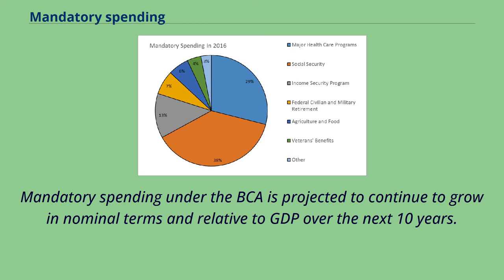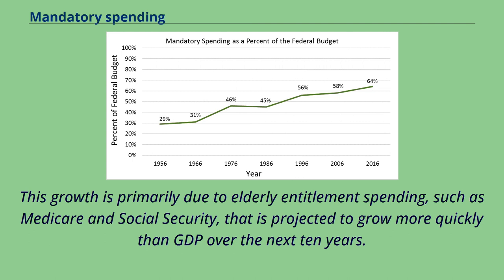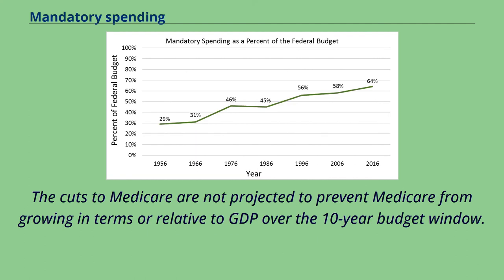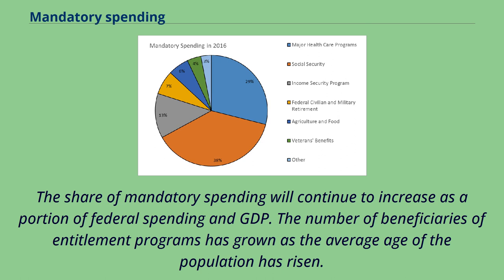Mandatory spending under the BCA is projected to continue to grow in nominal terms and relative to GDP over the next 10 years. This growth is primarily due to elderly entitlement spending, such as Medicare and Social Security, that is projected to grow more quickly than GDP. The BCA has a minimal effect on this trend, reducing mandatory spending under the automatic spending process by less than one-tenth of 1% of GDP annually. The cuts to Medicare are not projected to prevent Medicare from growing relative to GDP over the 10-year budget window. The share of mandatory spending will continue to increase as a portion of federal spending and GDP.